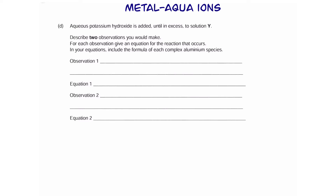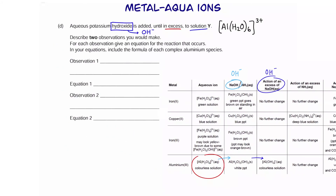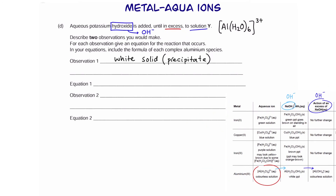Part D: aqueous potassium hydroxide is added until in excess to solution Y — describe two observations. Potassium hydroxide gives us hydroxide ions and we keep adding until in excess. When we add a little hydroxide, it forms a white precipitate. Observation 1: a white precipitate forms. The equation for the first reaction shows formation of the precipitate and water.